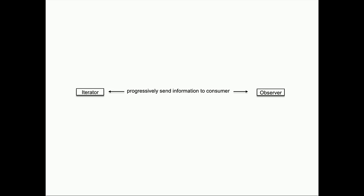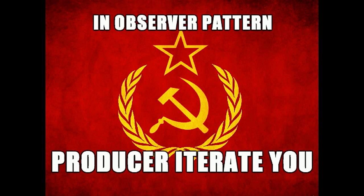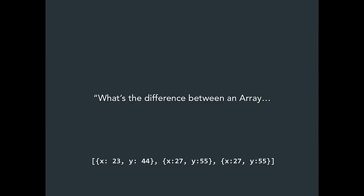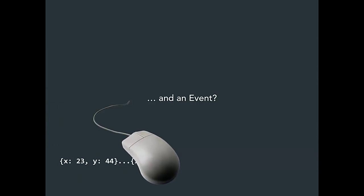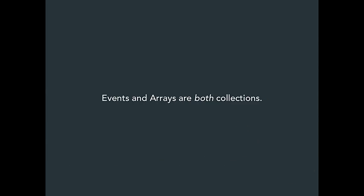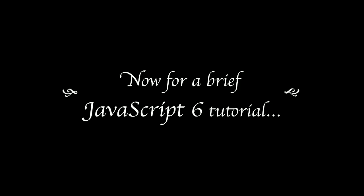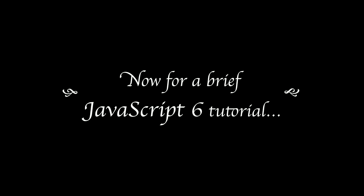That little mistake is at the heart of why it's so hard to do async programming today. Both patterns are really about progressively sending information from a producer to a consumer. So I want to ask you: what's the difference between an array and an event? I submit they're both actually collections. And if we think about events as collections, asynchronous programming becomes so much easier.